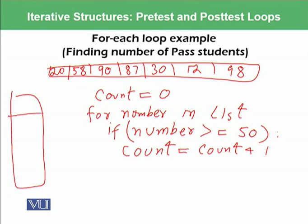Initially count has the value 0. When the loop reaches 58, count changes to 1. At 90, count becomes 2. At 87, count becomes 3. At 30 and 12, there is no change. At 98 there is a change, so count becomes 4. This means we have counted 4 passed students from the list using the for structure.